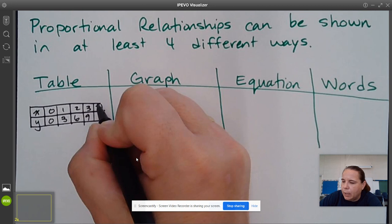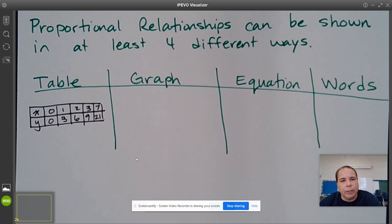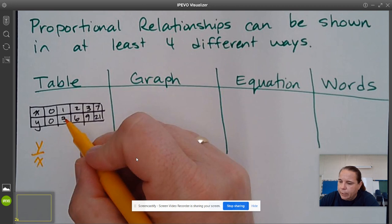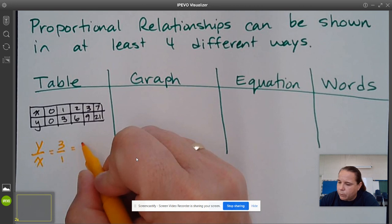So 1 times 3 is 3, 2 times 3 is 6, 3 times 3 is 9, 7 times 3 is 21. So this would be representing a proportional relationship. The reason we know it's proportional is because we can look at our Y over our X and see that it is always going to be 3.